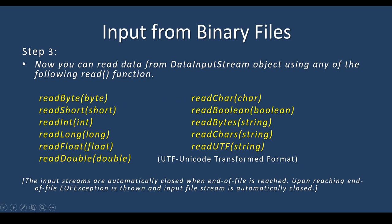Step 3: previously we saw write commands. Here, you are going to use read commands to read from the binary file. You can read data from the DataInputStream object using any of the following read functions. readByte reads the byte value, readShort reads the short value, readInt reads the integer value, readLong reads the long value, readFloat reads the float value, readDouble reads the double value, readChar reads the character value, readBoolean reads the boolean value. The first word is in lower case and the second word's first character should be in caps, written as a single word with no space in between.